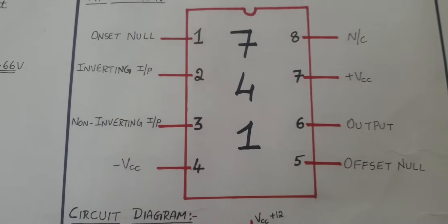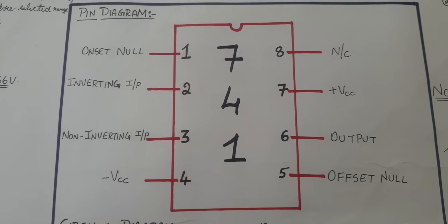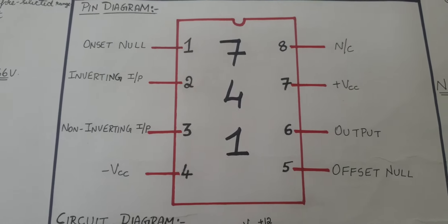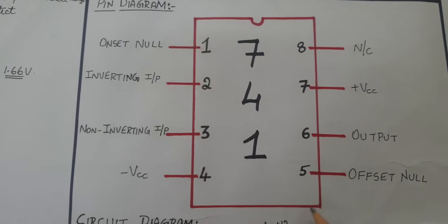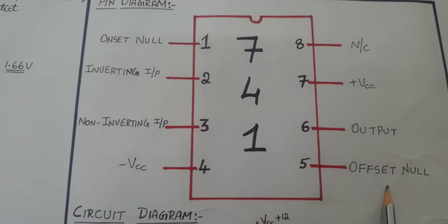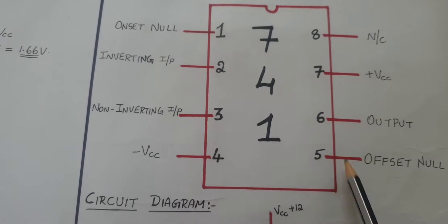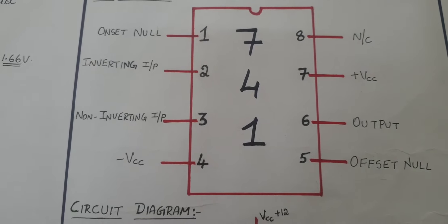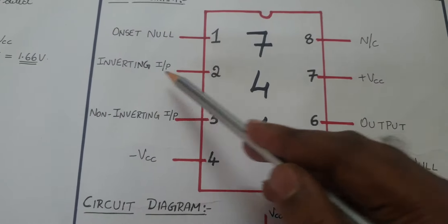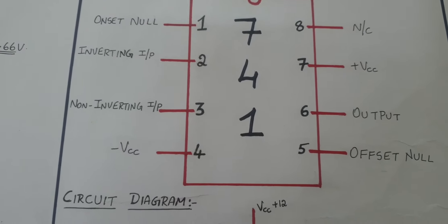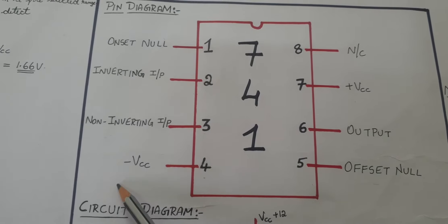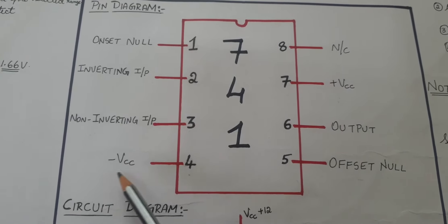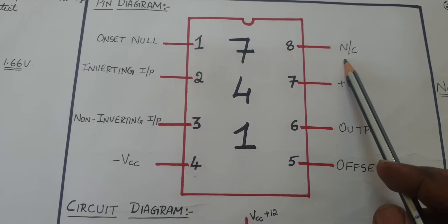To construct this circuit we are using IC 741. It is an eight-pin IC in which pin 1 and pin 5 are connected to offset null. These two points are used to ensure that the output produces zero voltage. Pins 2 and 3 act as inverting input and non-inverting input. Pin 7 is connected to plus VCC, pin 4 is connected to minus VEE, and pin 8 is no connection.